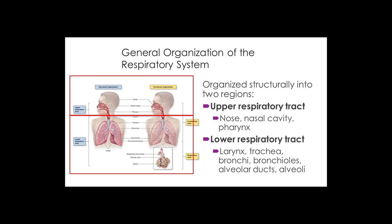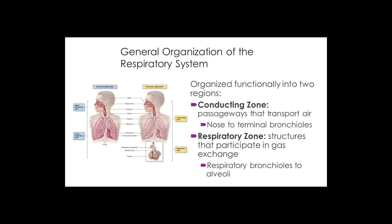There are about 23 generations of branches — we're not going to name them all. We can look at the respiratory tract based on function. The upper part, from your nose down into these generations of branches, is called the conducting zone because all that's happening in these passageways is air is conducted in and out. No gases are exchanged because the walls of the airways are too thick for diffusion, and there's no high density of capillaries associated with them.